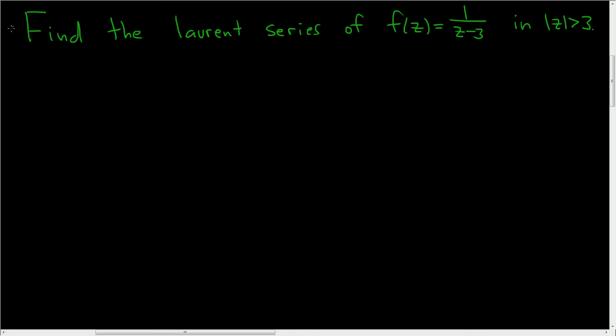We're being asked to find the Laurent series of f of z equals 1 over z minus 3 in this region right here, so solution.